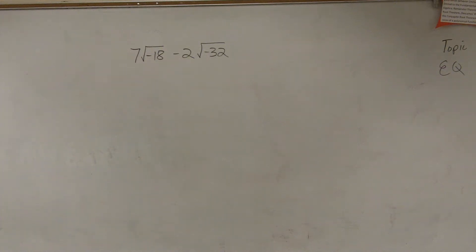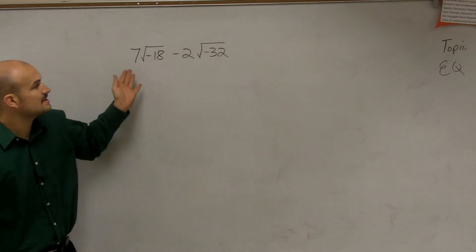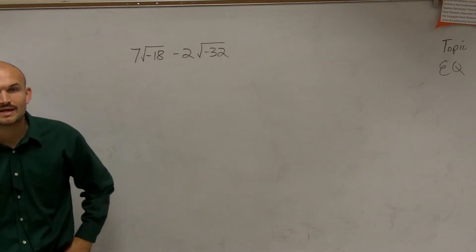So what are we going to do if I want to simplify this complex situation? What I have is 7 times the square root of negative 18 minus 2 times the square root of negative 32.